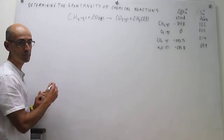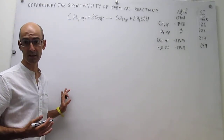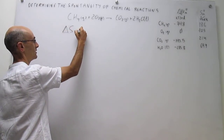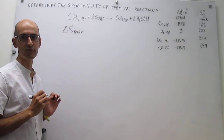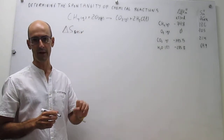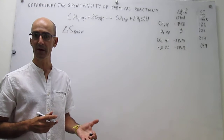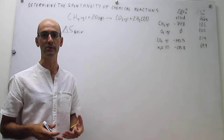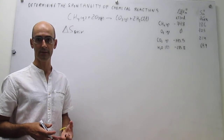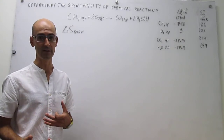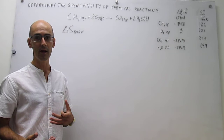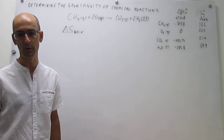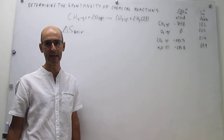To do that, we have to apply the second law. That is our criterion of spontaneity, which says that you have to calculate the change in entropy in the universe for that chemical reaction. If that is positive, then we can say the reaction is spontaneous. If it's negative, then the reaction is not spontaneous as written — instead, it will be spontaneous in the reverse direction. And if it's zero, we say the reaction is at equilibrium.